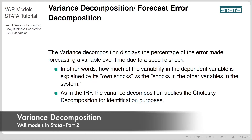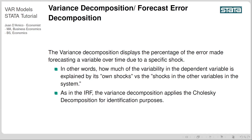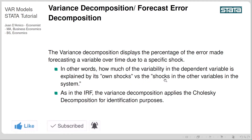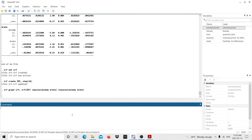Now let's move into the variance decomposition. The variance decomposition displays the percentage of the forecast error for a variable over time due to a specific shock. In other words, we are asking how much of the variability in the dependent variable is explained by its own shocks versus shocks in the other variables in the system. Similarly to the impulse response functions, the variance decomposition applies the Cholesky decomposition for identification. I'm going to display the variance decomposition — first I'd like to display how unemployment changes due to a shock on unemployment and a shock on the fed rate. I type: irf